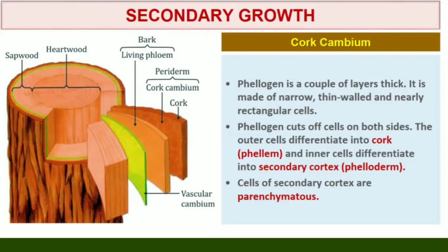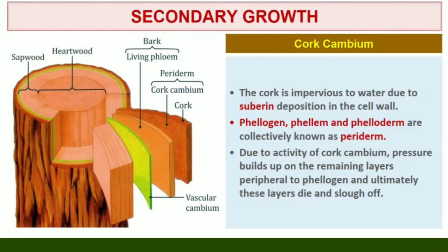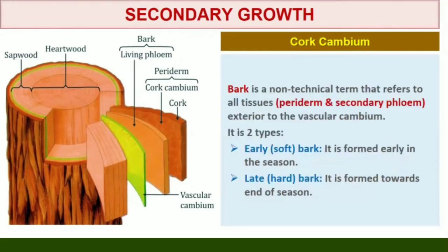The cork is impervious to water due to suberin deposition in the cell wall. The cells of secondary cortex are parenchymatous. Phellogen, Phellem, and Phelloderm are collectively known as Periderm. Due to activity of the cork cambium, pressure builds up on the remaining layers peripheral to phellogen and ultimately these layers die and slough off. Bark is a non-technical term that refers to all tissues exterior to the vascular cambium, therefore including secondary phloem. Bark refers to a number of tissue types: Periderm and secondary phloem. Bark formed early in the season is called early or soft bark. Towards the end of the season, late or hard bark is formed.